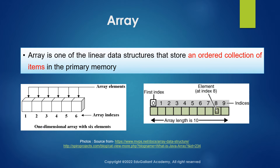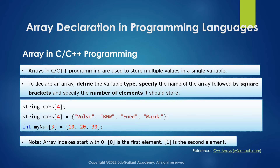The first programming language uses index 0. The element is at the index position, starting from index 0. The index goes up to index 10. The data types are related to integer, string, and floating point.